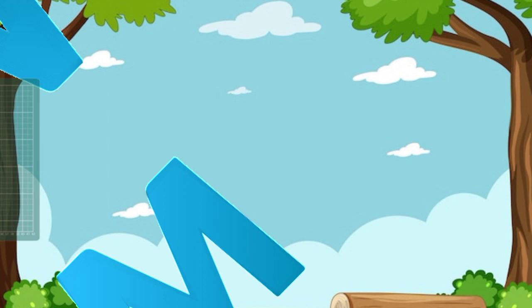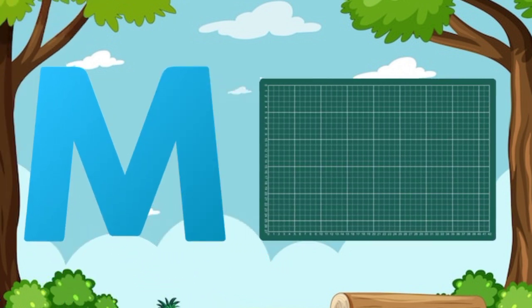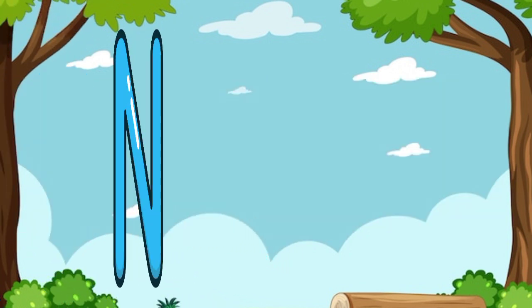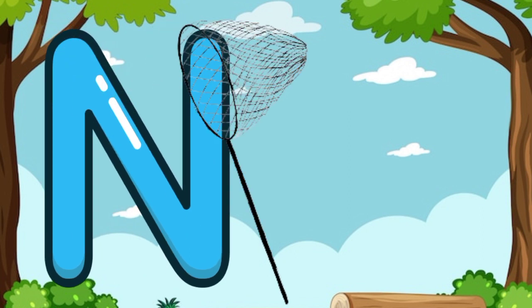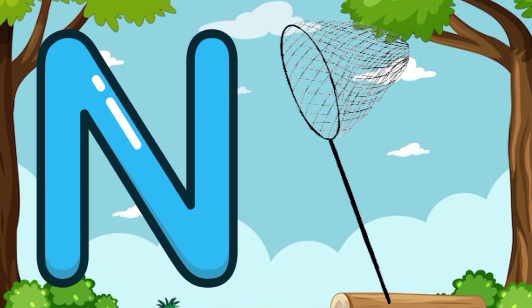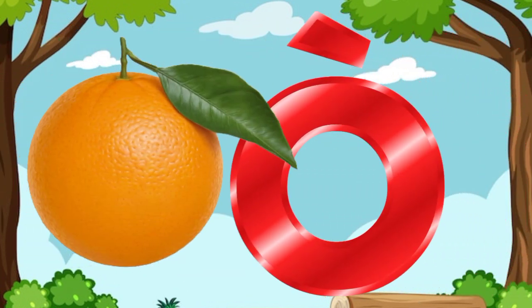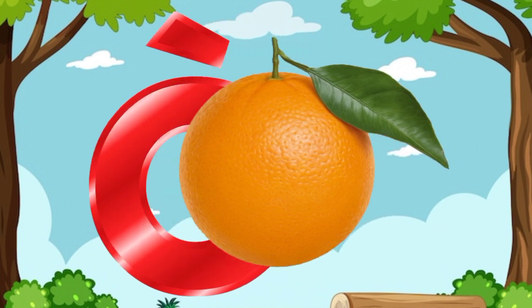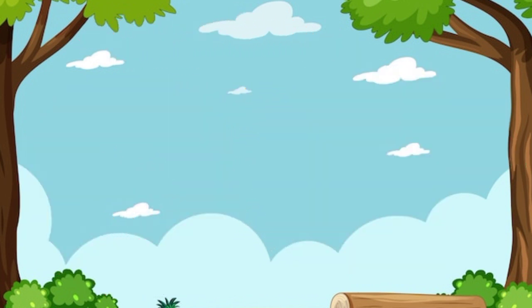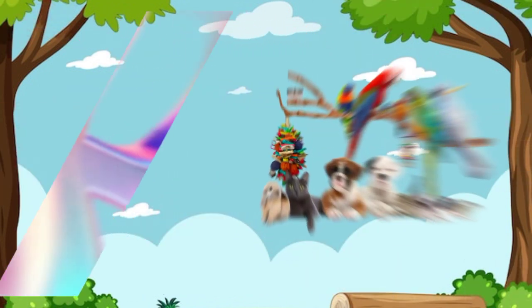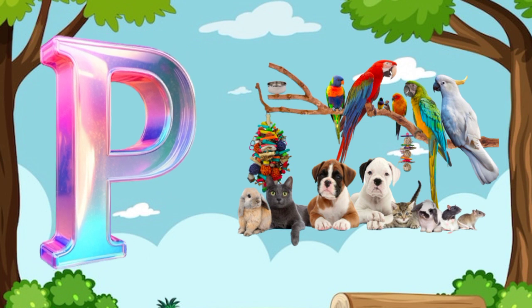M is for mat, m-m-mat. N is for net, n-n-net. O is for orange, o-o-orange. P is for pet, p-p-pet.